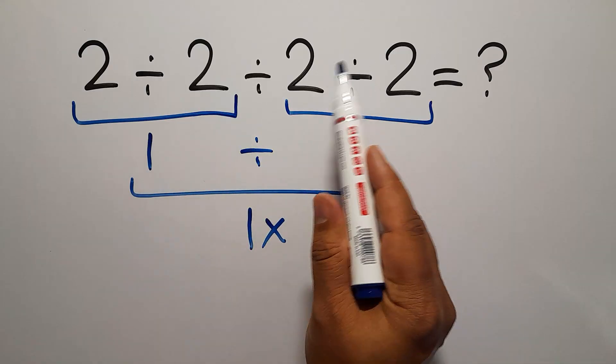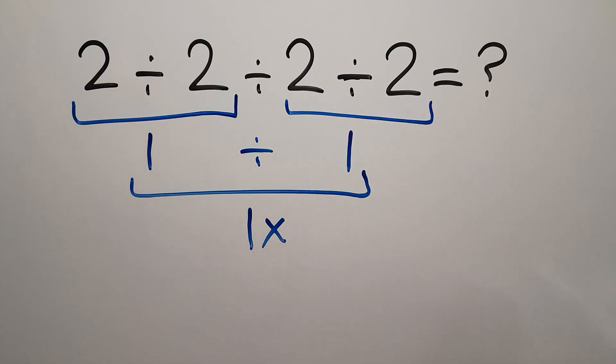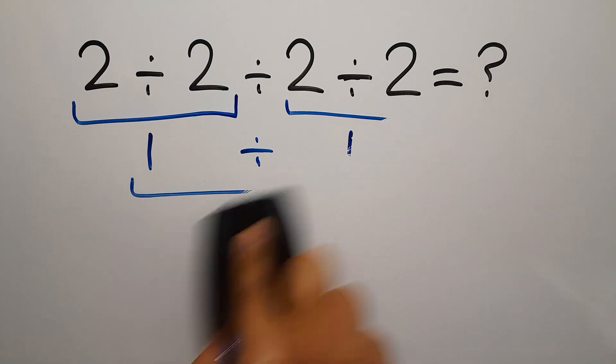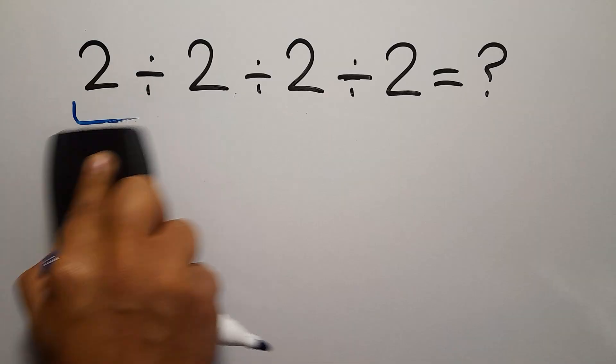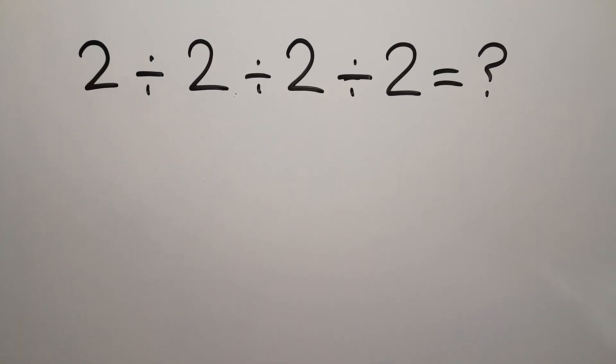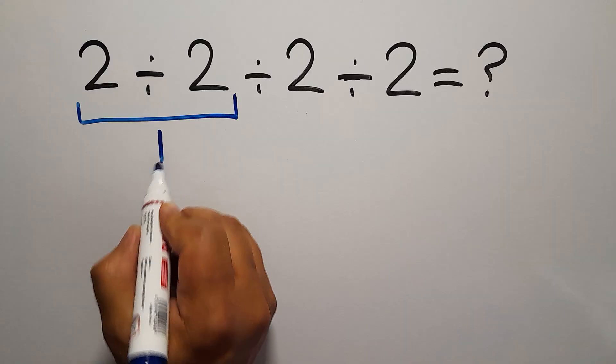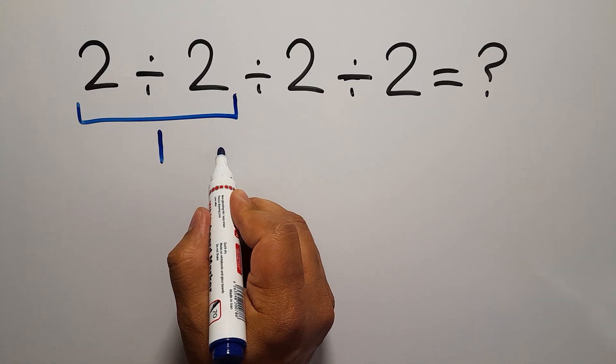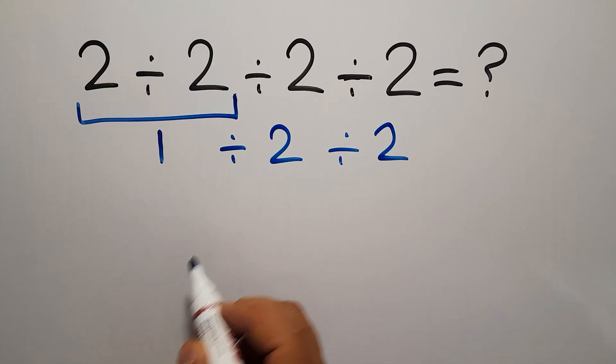Okay, let's do it. 2 divided by 2 gives us 1, so we have 1 divided by 2 and again divided by 2.